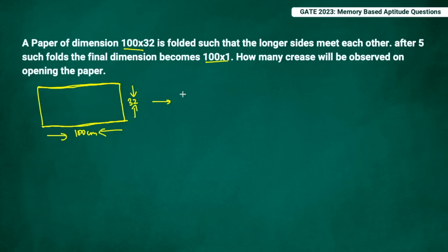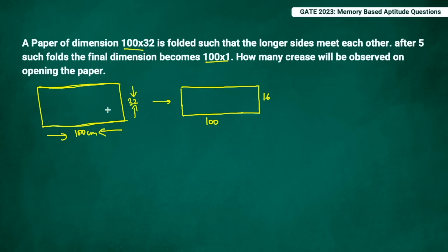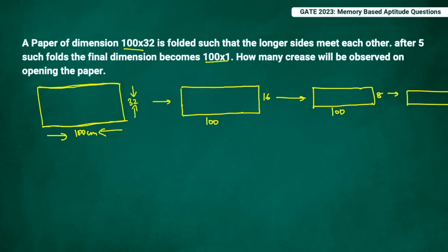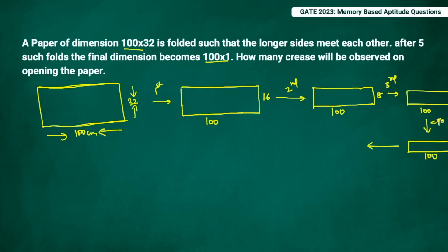Once you fold it, the width decreases and becomes half: from 32 it becomes 16, while the 100 cm side stays unchanged. On the second fold it becomes 8, third fold becomes 4, fourth fold becomes 2, and on the fifth fold you get the final dimension of 100×1, which matches what the question states. So five folds reduce the 32 cm side to 1 cm.